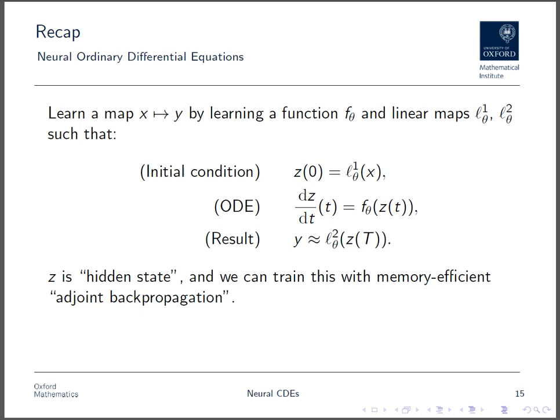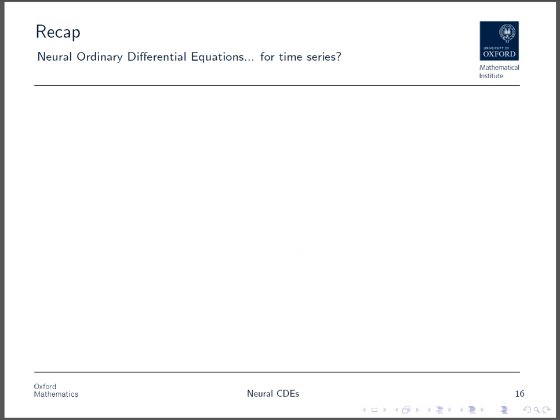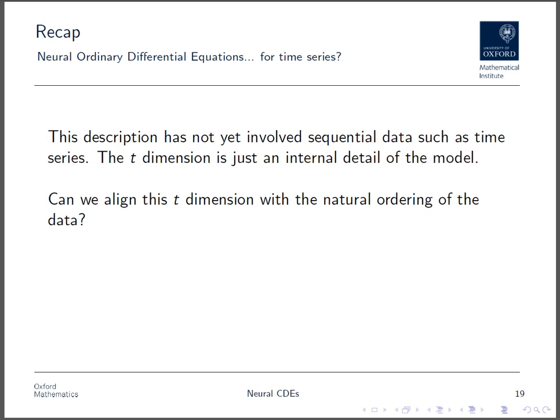Moreover, the ODE structure allows us to train with adjoint backpropagation, which allows us to recompute the forward trajectory during the backward pass, so we don't need to record it in memory. This gives improved memory efficiency. Now, the objects x and y that we're mapping between don't have any special structure, so this description hasn't yet involved sequential data such as time series. The t-dimension that's been introduced is just an internal detail of the model.